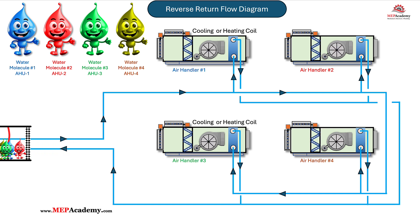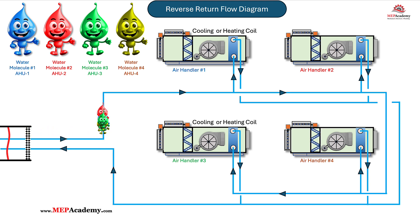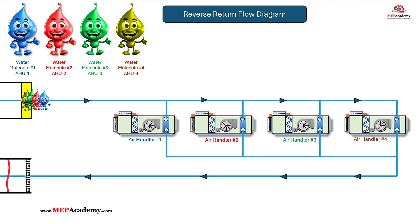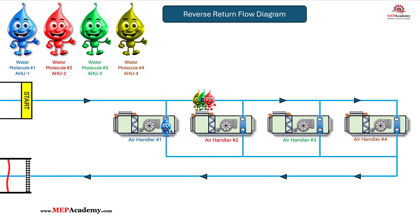The theory is that each air handler will have the same distance from the source and back, which would make their pressure drops equal and balancing valves not required. In theory, maybe — but air handler zone differences can affect the pressure drop through each coil as each control valve adjusts flow for its current zone demand. All the water leaving the chiller will return from each air handler at approximately the same time, as the total round-trip piping length is the same distance. The water for each air handler arrives at different times, but the total length is the same overall, which balances out the pressure drop in a perfect world.